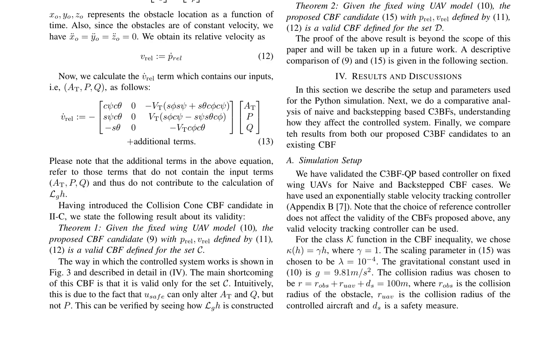The simulation setup is described in section IV, where the C3BF QP-based controller is validated on fixed-wing UAVs for both naive and backstepped CBF cases. The exponentially stable velocity tracking controller used in the simulation is described in Appendix B. The class K function in the CBF inequality is chosen as kappa(h) equals gamma*h where gamma equals 1. The scaling parameter in equation (15) is chosen to be lambda equals 10^4. The gravitational constant used in equation (10) is g equals 9.81 meters per square second. The collision radius is chosen to be R equals ROBS plus RUAV plus DS equals 100 meters. The results of the simulation are presented in the following section, where a comparative analysis of naive and backstepped C3BFs is performed. The results from both proposed C3BF candidates are also compared to an existing CBF.